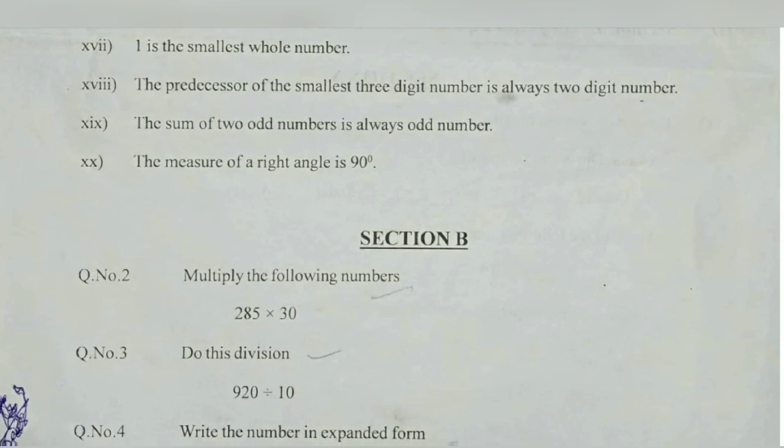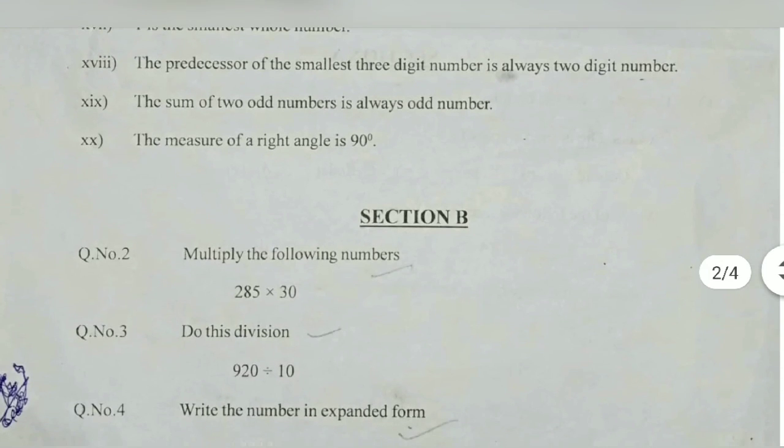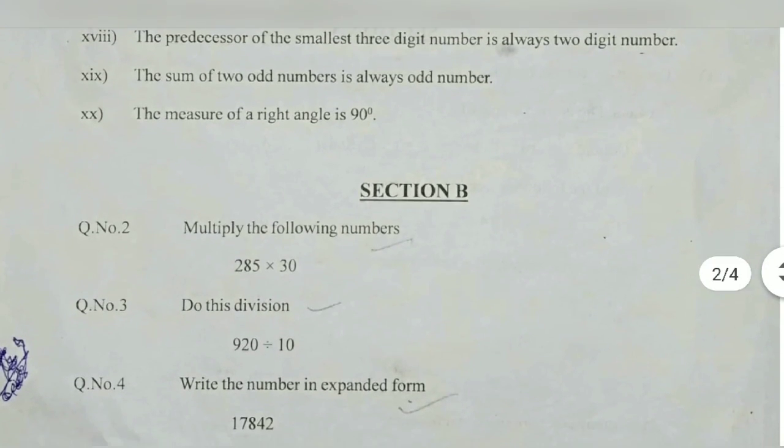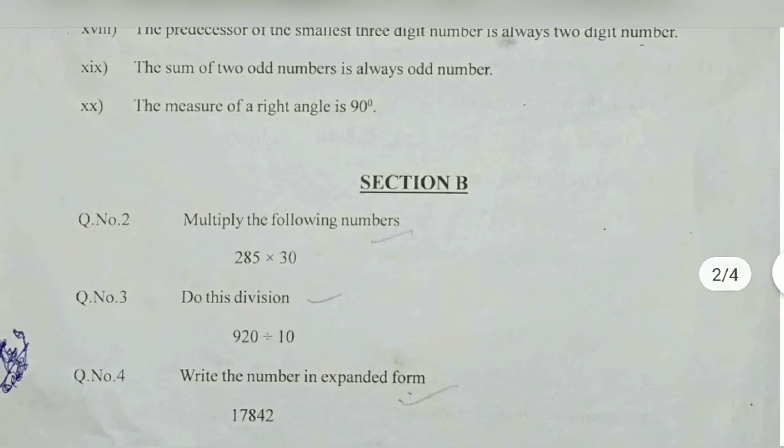The measure of a right angle is 90 degrees, so the statement is true. Multiply the following numbers 285 into 30, we can do this the normal way. Do the division 920 divided by 10, very easily we can do, 92 is the answer. We can do this division method.